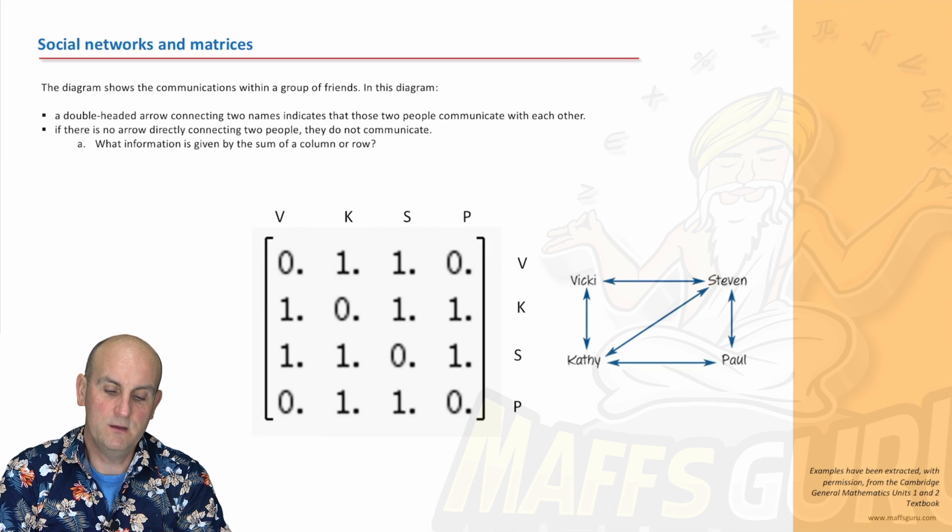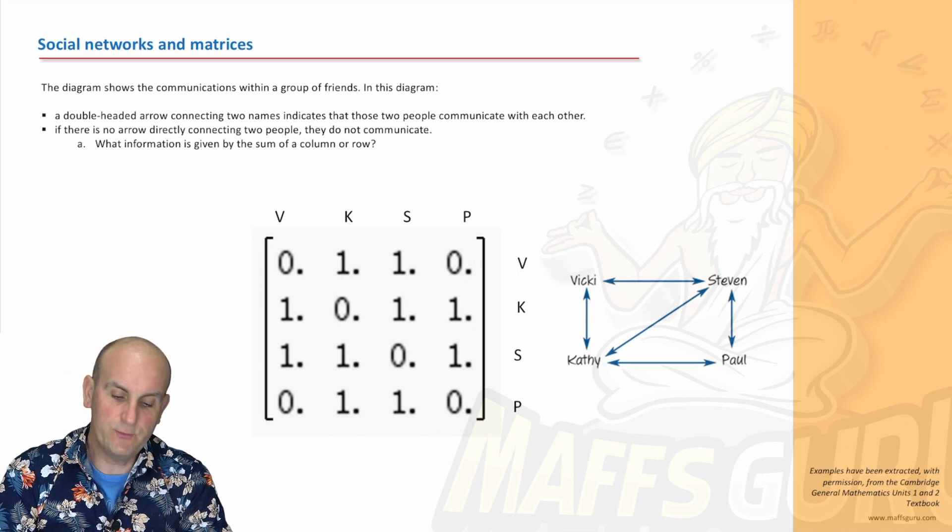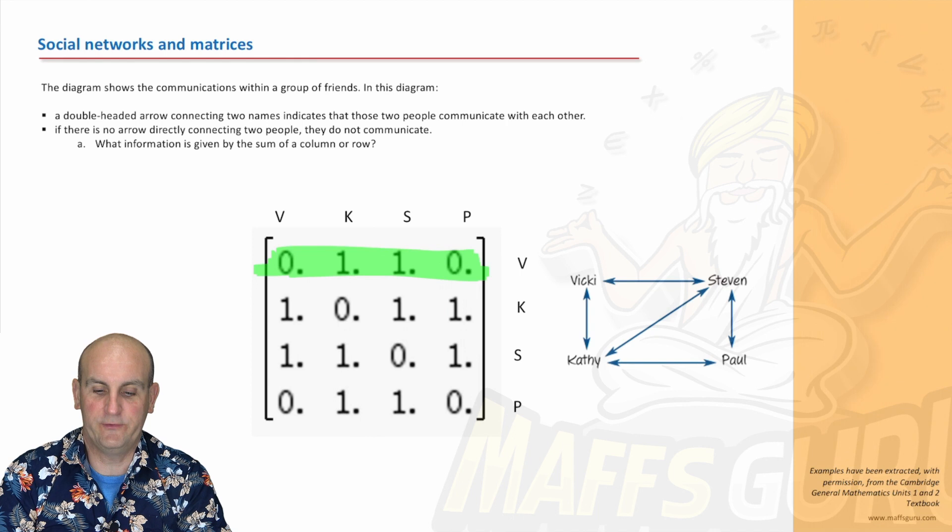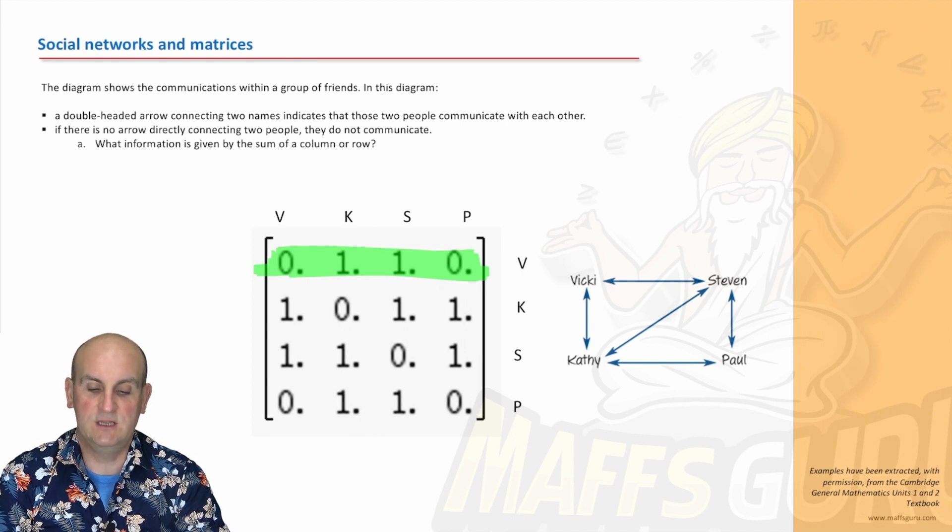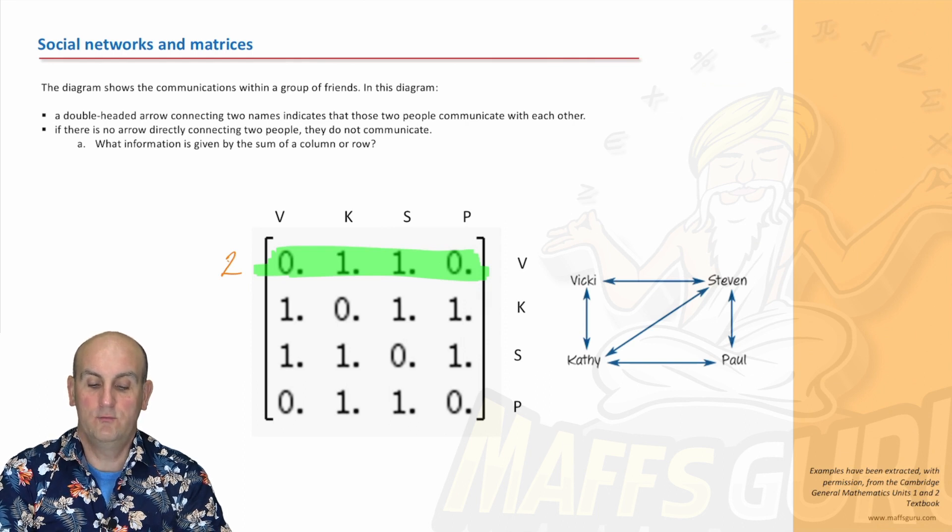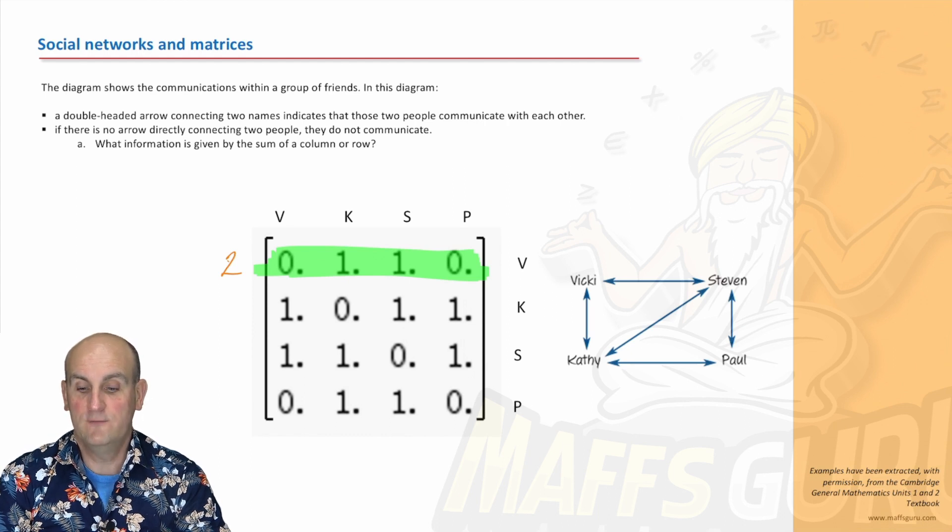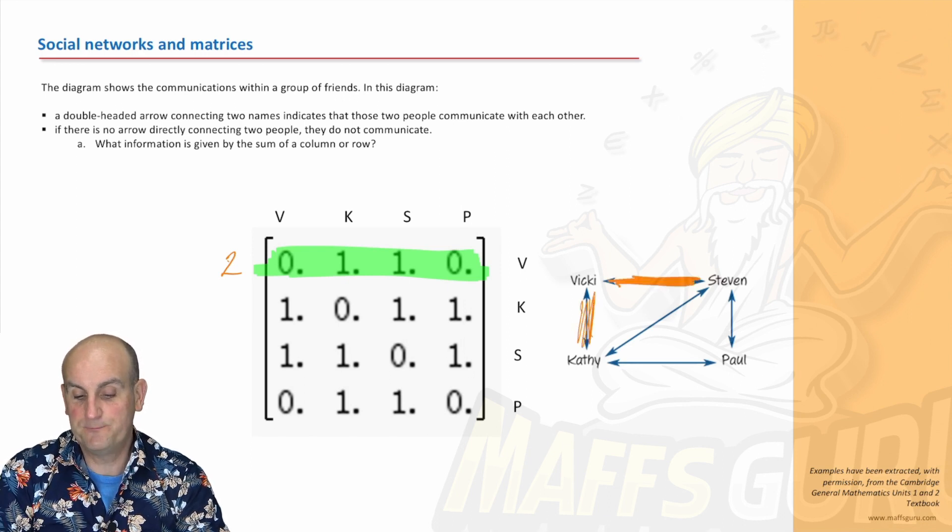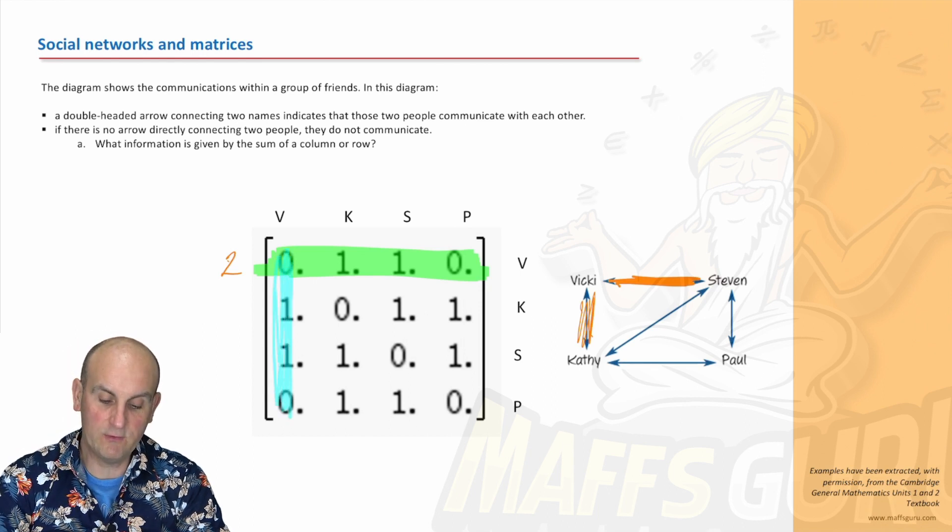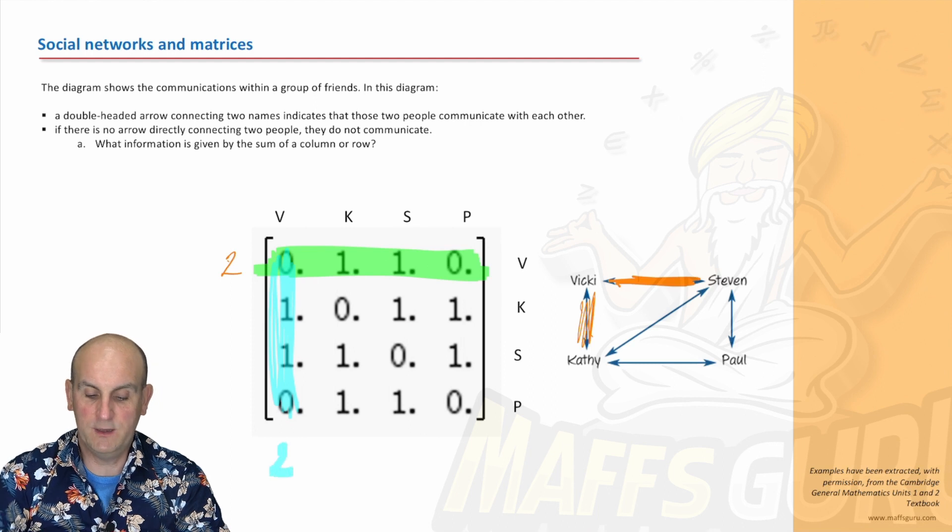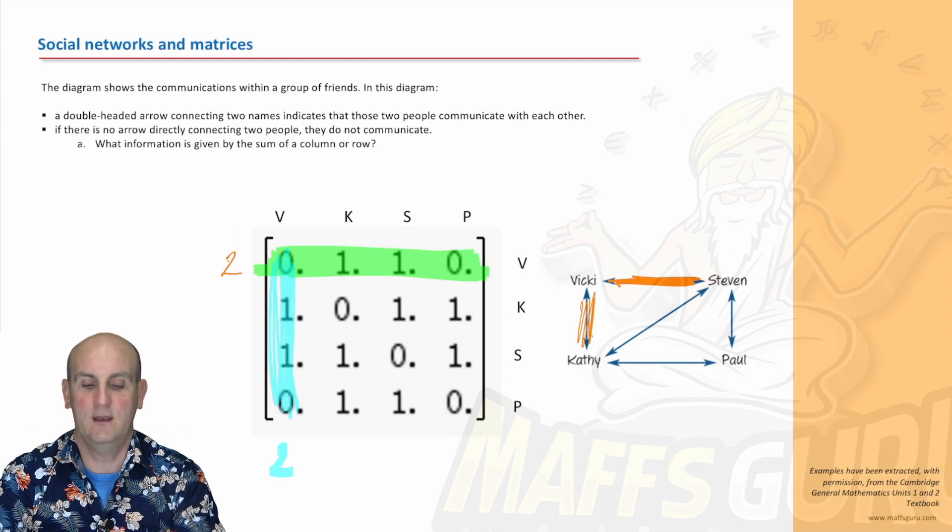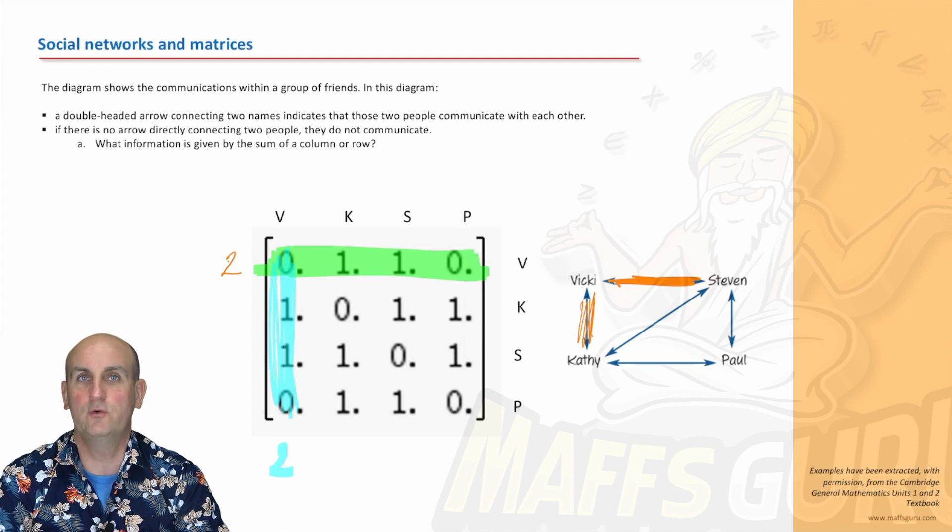What information is given by the sum of a column or row? If we look at that row there for Vicky, if I add those together I get the number two. What does that mean? That two basically means that Vicky talks to two people. Vicky has a connection directly to two people, Kathy and Stephen. If we add the same values in this row, we get the number two again because of that two-way communication. That's the number of people who can talk or the number of connections.